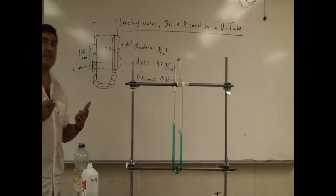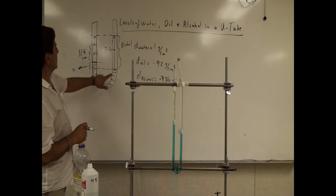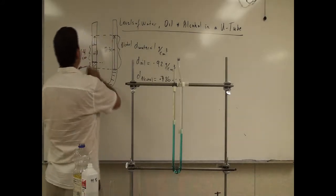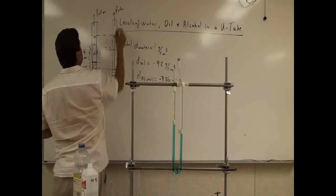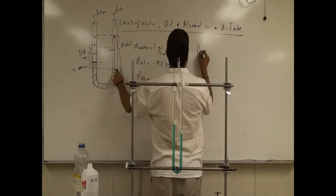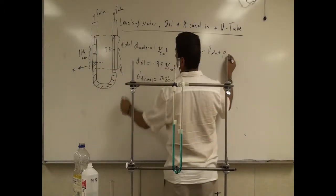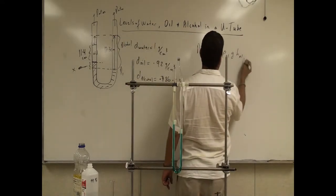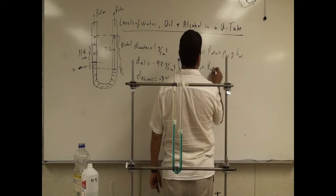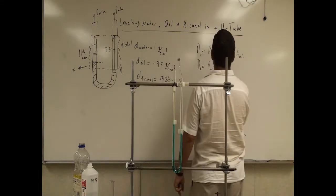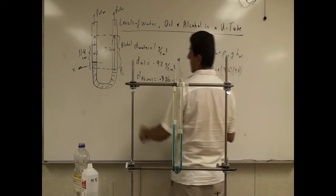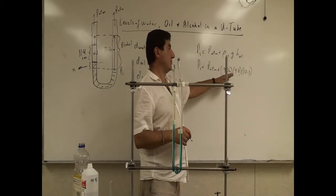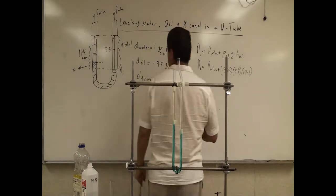Let's do the calculation. The pressure at the bottom of each side must be the same. The atmospheric pressure at the top is the same on both sides. So P1 equals P-atmosphere plus the density of alcohol times gravity times the height of the alcohol — that gives P-atmosphere plus 0.786 times 9.8 times 17.3 centimeters.